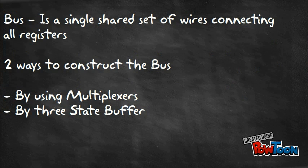A bus is a single shared set of wires connecting all registers. There are two ways to construct the bus: first is by using multiplexers, and the second is by using a three-state buffer.